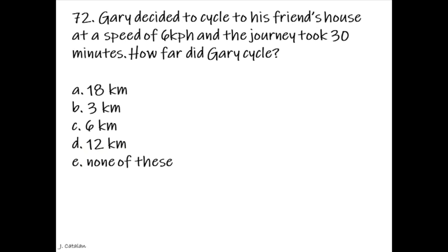Question 72: Gary decided to cycle to his friend's house at a speed of 6 km/h and the journey took 30 minutes. How far did Gary cycle? Answer: 3 kilometers.